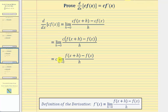So now we have c times the limit as h approaches zero of, this is just the difference quotient, and therefore this limit is equal to f prime of x, giving us c times f prime of x.